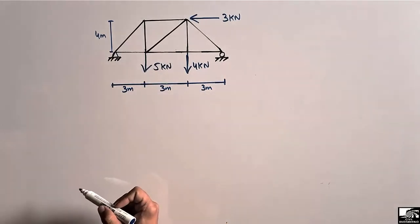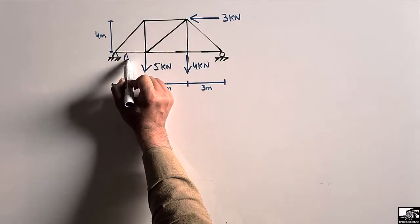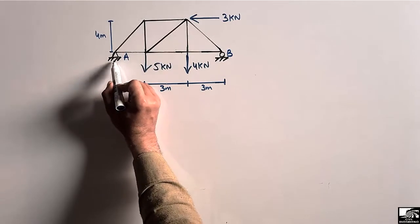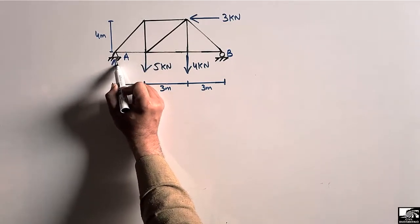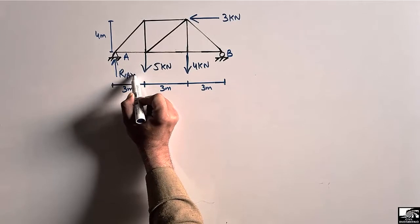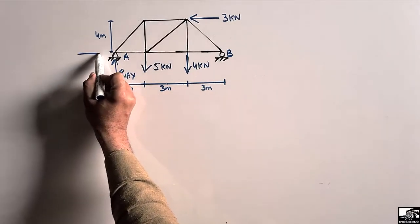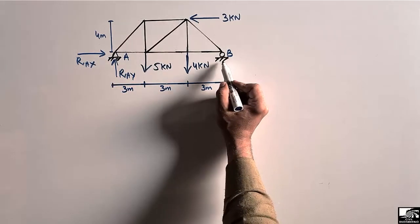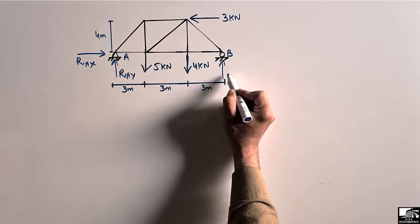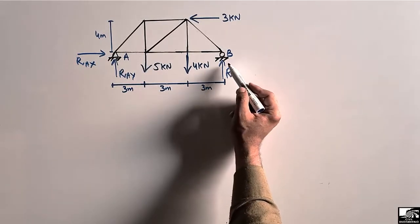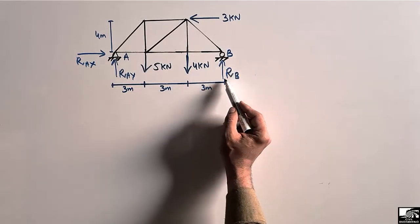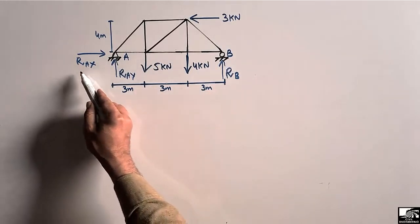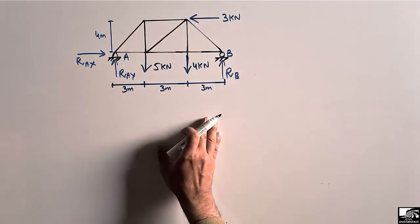We consider support A and support B. Support A is a hinge support, so it can take the vertical reaction R_AY and the horizontal reaction R_AX. Support B is a roller support, so it can only take the vertical reaction R_B — it cannot resist horizontal load.